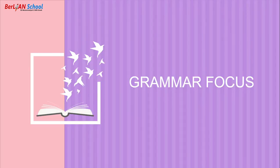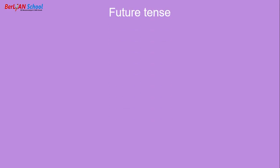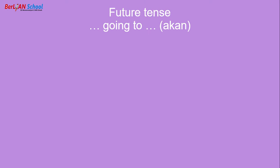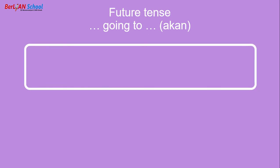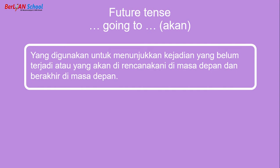The next session is about grammar focus. In this meeting, we talk about future tense with 'going to'. 'Going to' means 'akan' (will). Future tense is used to show events that have not yet happened or that are planned to happen in the future — things that are still planned and have not occurred yet.